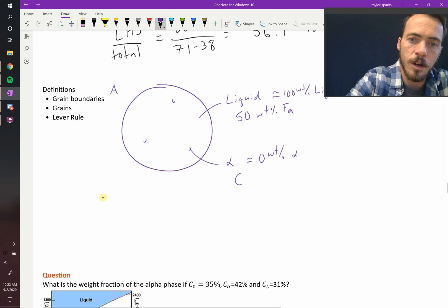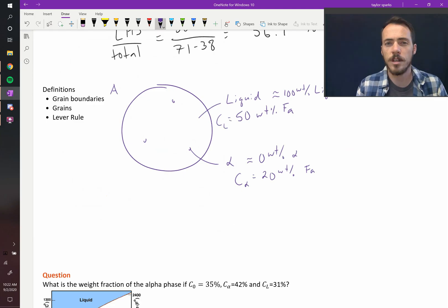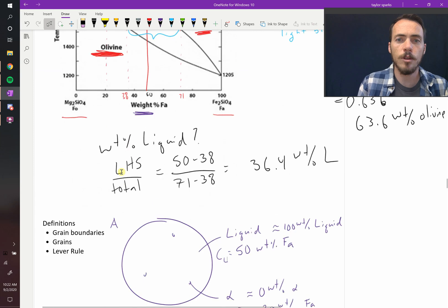So its composition, the composition of alpha equals 20 weight percent of FA. So the composition of the liquid is 50, the solid is 20. See how this works? So we can label it. Now let's do the one that we just solved for.